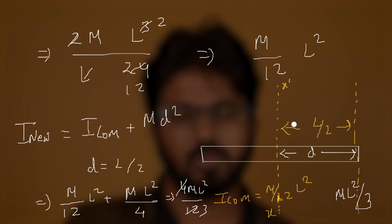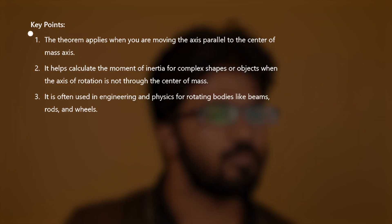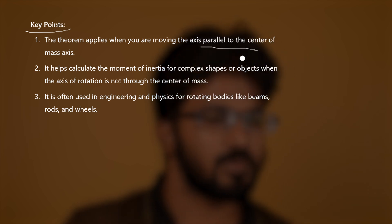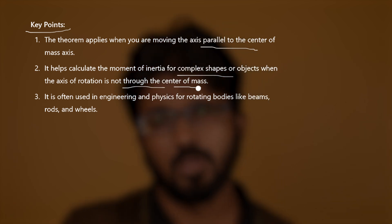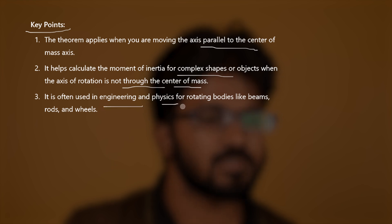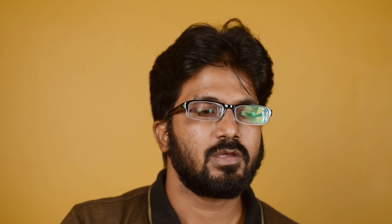With the help of the parallel axis theorem we can find the moment of inertia about any axis parallel to the center of mass axis. Key points to remember: the theorem applies when moving to an axis parallel to the center of mass axis. It helps calculate the moment of inertia for complex shapes where the axis is not through the center of mass. It is widely used in engineering and physics for rotating bodies — rods, beams, wheels, spheres, and other 3D objects. More applications will be covered in the next video. Thank you for watching.